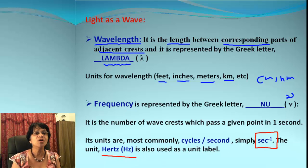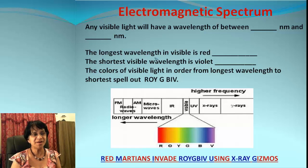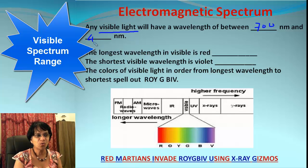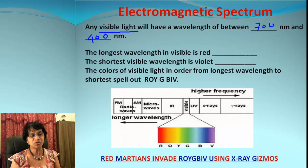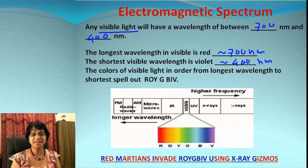Let's get some basics about electromagnetic spectrum. The spectrum could be visible light, and if it's visible light it will have a wavelength range between 700 nanometers and 400 nanometers. The longest wavelength in visible is red, which is roughly about 700 nanometers, and the shortest wavelength is violet which is roughly about 400 nanometers.